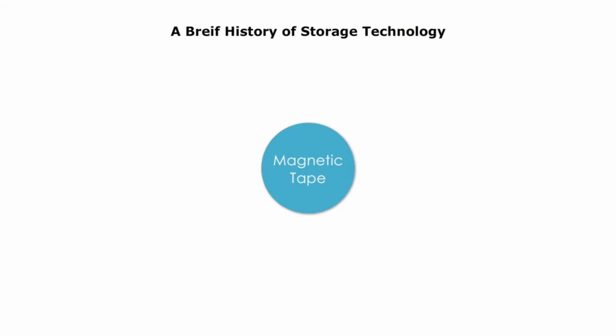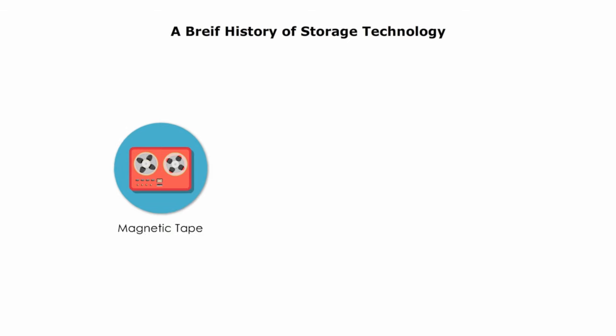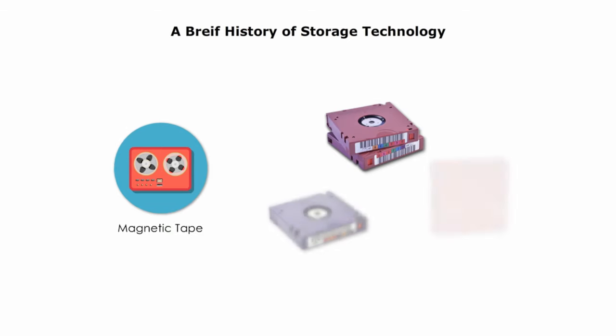The first magnetic storage media appeared in the 1950s. They were tapes that could store a lot of data using magnetism. Some big data centers still use them today to back up their data.